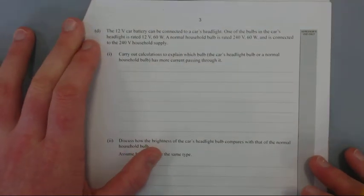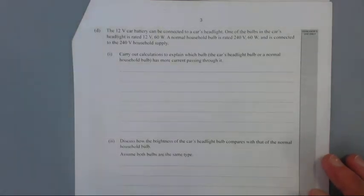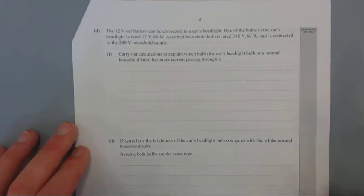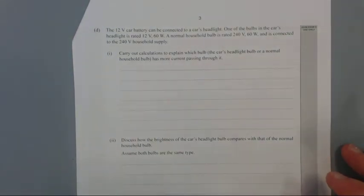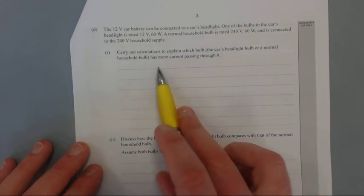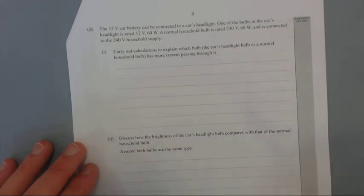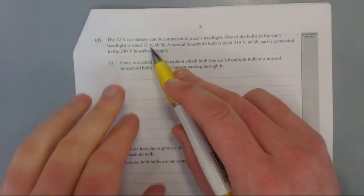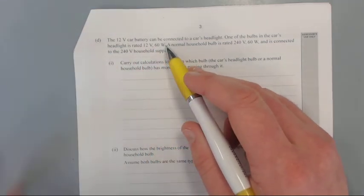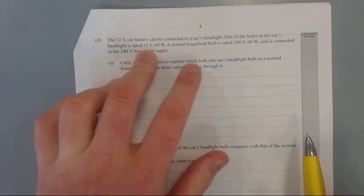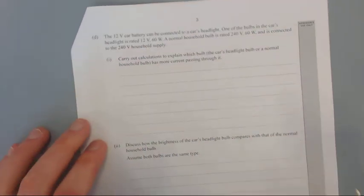Part D: The 12 volt car battery can be connected to a car's headlight. One of the bulbs in the car's headlight is rated for 12 volts at 60 watts, and is connected to the 12V household supply. A normal household bulb is rated for 240 volts at 60 watts and connected to the 240 volt household supply. Carry out calculations to explain which bulb has more current passing through it. I can tell you straight off the bat, it's going to be the car bulb. In order to have the same amount of energy, it's going to need a whole lot more current, just because it's only putting out 12 volts.